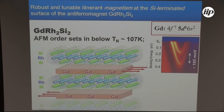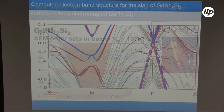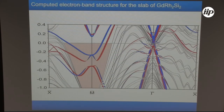Seeing these results, we decided to turn to gadolinium rhodium disilicide, anticipating that most of this physics would be much more explicitly observed. The Néel temperature of this system is 107 K, so we have a much larger temperature window to explore all related phenomena. First we performed DFT calculations, which suggest that for the magnetically ordered state with silicon termination we should see not only magnetic splitting of the surface state at the endpoint, but also the Dirac cone feature at the gamma point should be split.